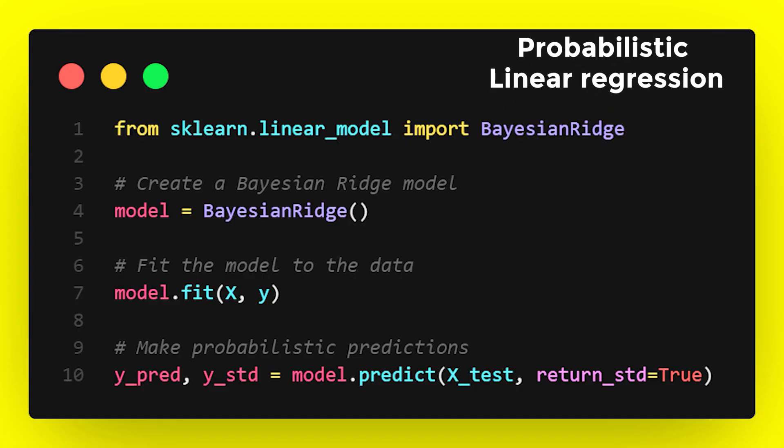One common way to implement Bayesian Ridge is by using the BayesianRidge module from sklearn. Here, I'm fitting my input data X with the target data Y.